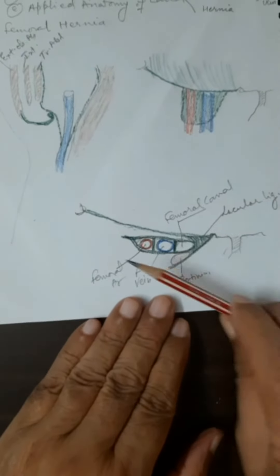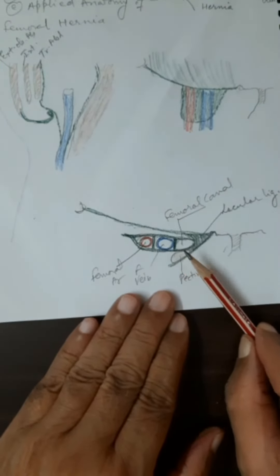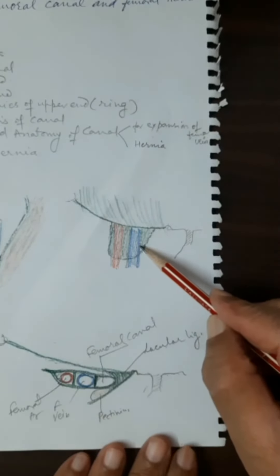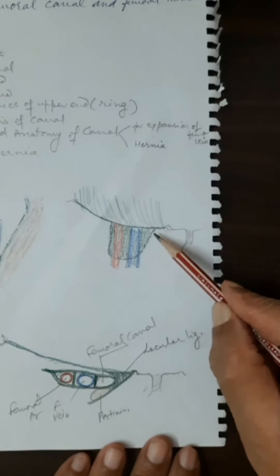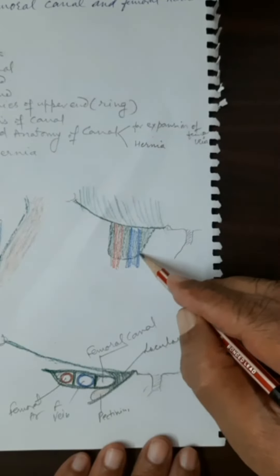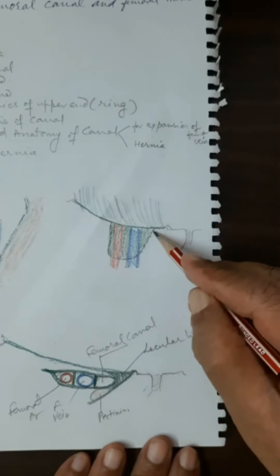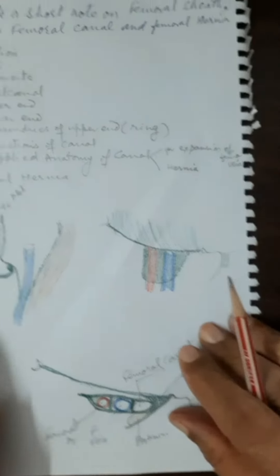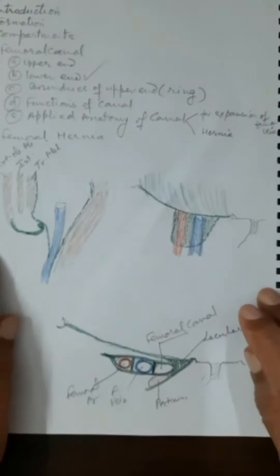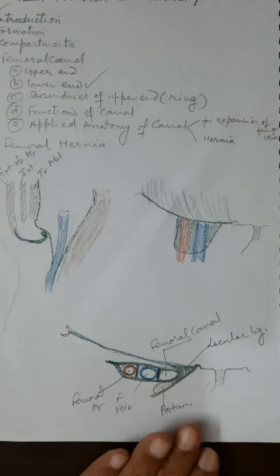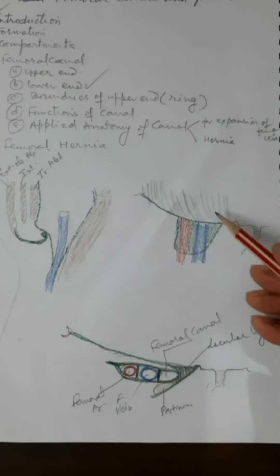If you see the whole extent of the canal in profile from the top, the canal traced downward blends with the tunica adventitia of the femoral vein, so the lower end of the canal is closed. If you trace the canal upward, the canal is open upward, opening into the abdominal cavity, separated only by peritoneum and extra-peritoneal fibro-fatty tissue.